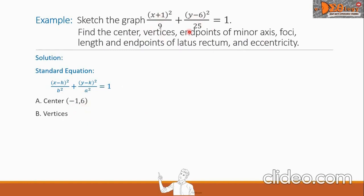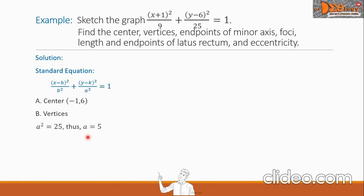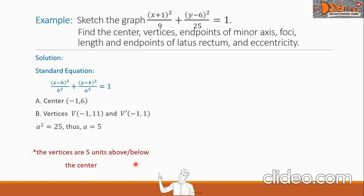Next are the vertices. We have two denominators, and the bigger denominator is a². So we write a² = 25. We solve for a by taking the square root, giving a = 5. This means the vertices are 5 units above or below the center. So the coordinates of the vertices are V: (−1, 11) and V': (−1, 1).